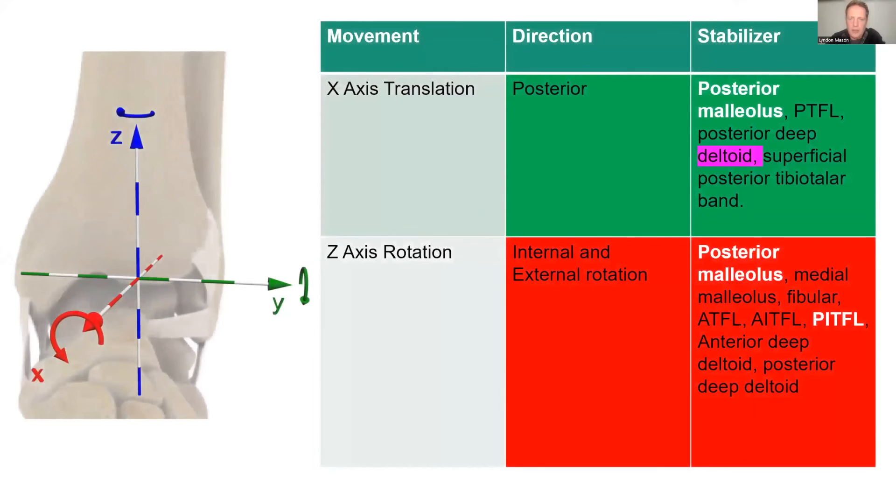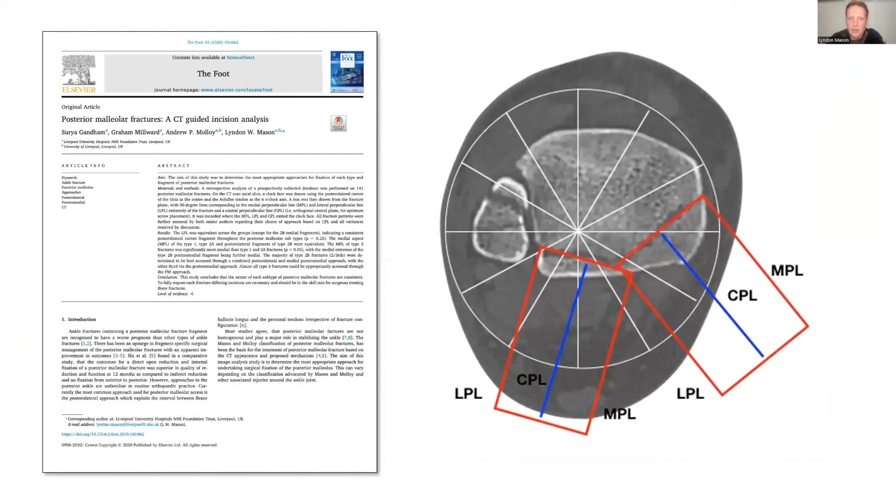As I said, we need to add in this Z-axis rotation, and over the last two or three years, biomechanical studies have shown that this is really important for rotation. It's the rotational pilon that gives you this.